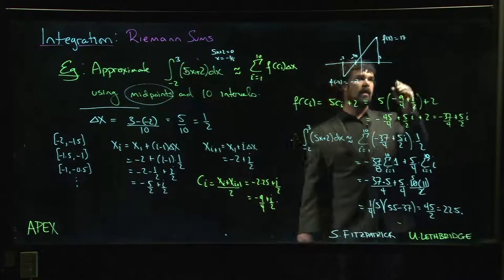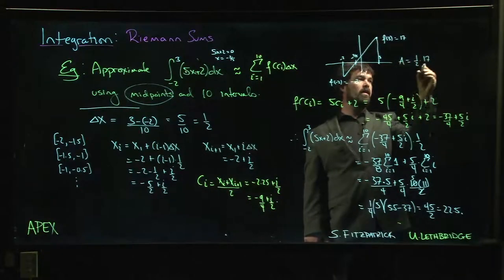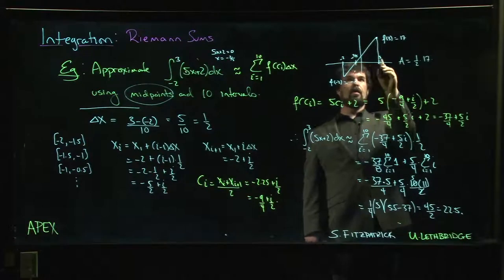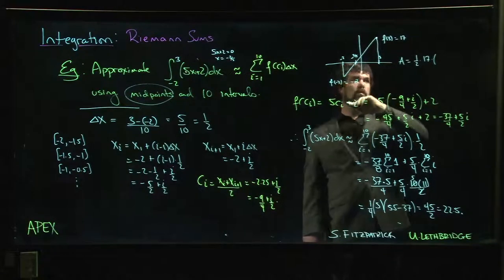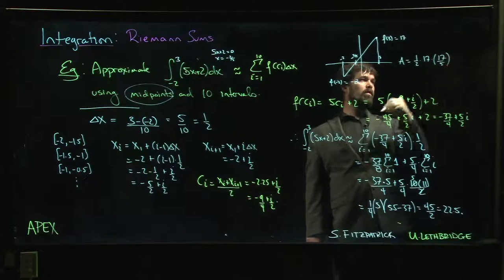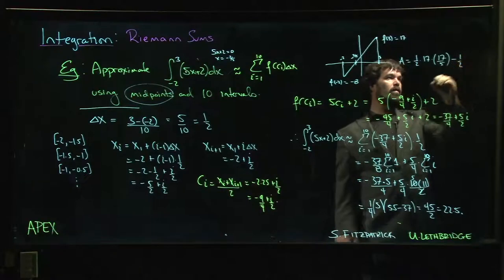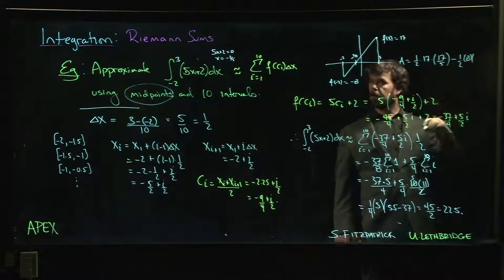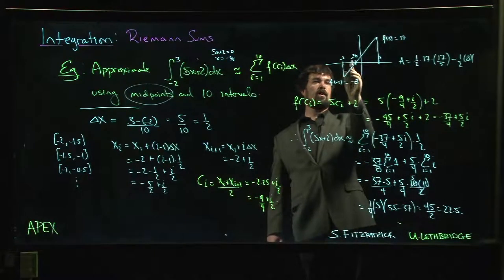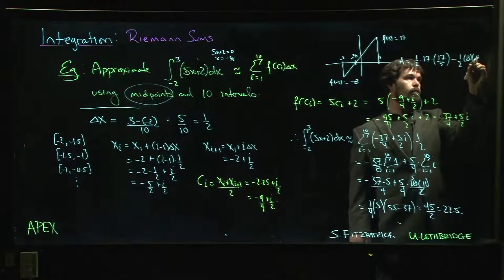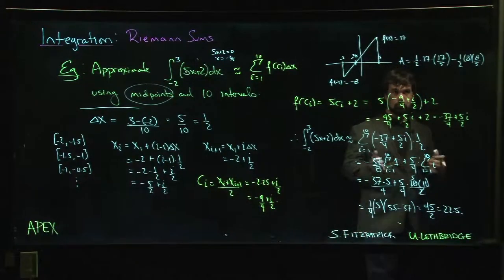So we can work out that the height here, f of 3 is going to be 17. f at minus 2 is going to be minus 8. And so you can work this out, that the area is going to be, well, it's going to be 1 half times 17, that's the height here, times the base, which is 3 plus this 2 over 5, so 15 plus 2, so 17 over 5, subtract. And so then we're going to have 1 half height of 8 base of, so let's see, 2 is minus 10 over 5. We go back, so minus 8 over 5.